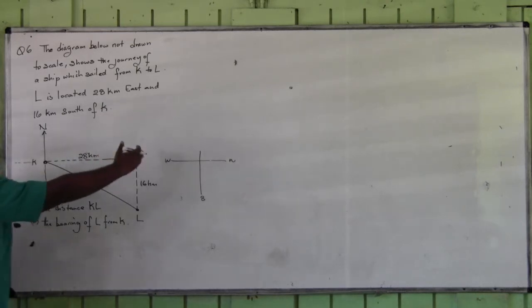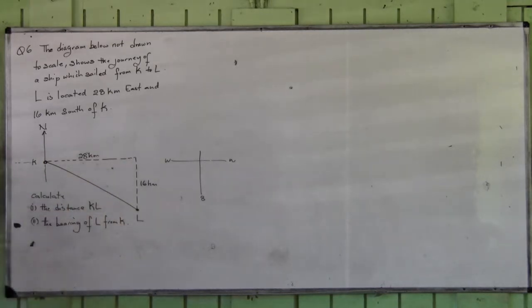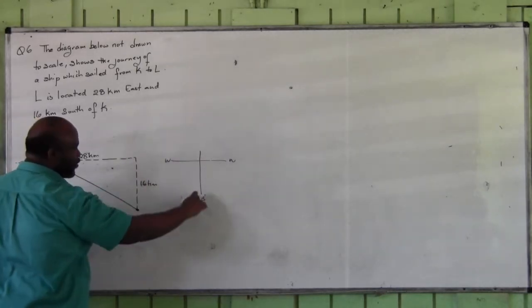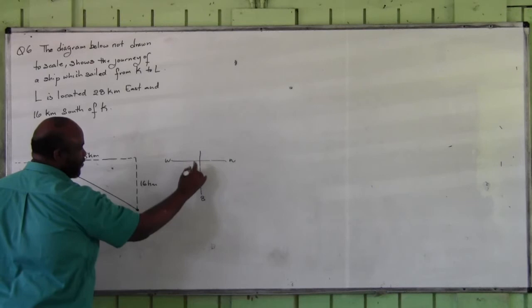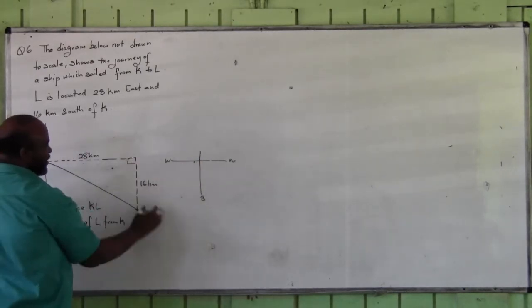And 16 kilometers south of K. So from K if you went 28 kilometers east and 16 kilometers south, you get to L. Ladies and gentlemen, if you went east and then south, what's the angle here?